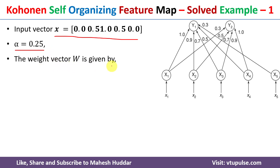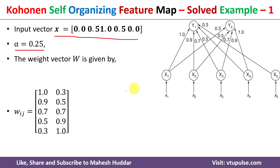The weight matrix W is already shown in the network. With respect to Y1, the weights W_i1 are 0.1, 0.9, 0.7, 0.5, and 0.3 — written in the first column. The weights with respect to Y2 are 0.3, 0.5, 0.7, 0.9, and 1.0 — written in the second column. The first column corresponds to cluster 1, the second column to cluster 2.